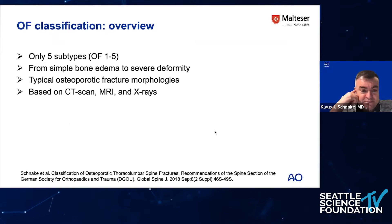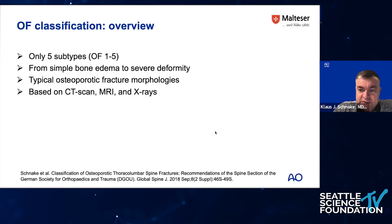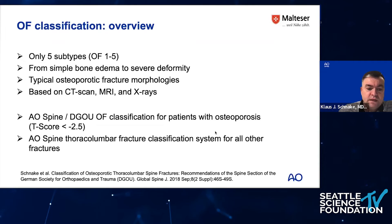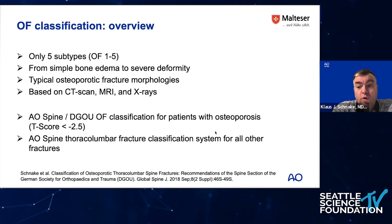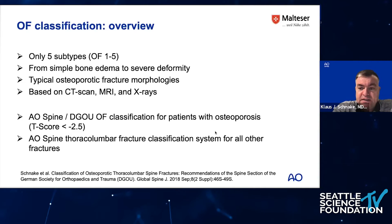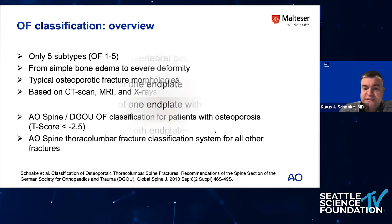The OF classification has only five subtypes, which are relatively easy to memorize. It starts with a simple bone edema and ends up with a cava deformity. It reflects typical osteoporotic fracture morphologies and is based on CT scan, MRI, and X-rays — mainly on CT scan plus MRI. The classification is created for patients having osteoporosis, meaning a T-score less than minus 2.5, whether they have an insufficiency fracture or osteoporosis as a comorbidity with minor trauma. In all other cases, we can still use the AO Spine thoracolumbar fracture classification system.